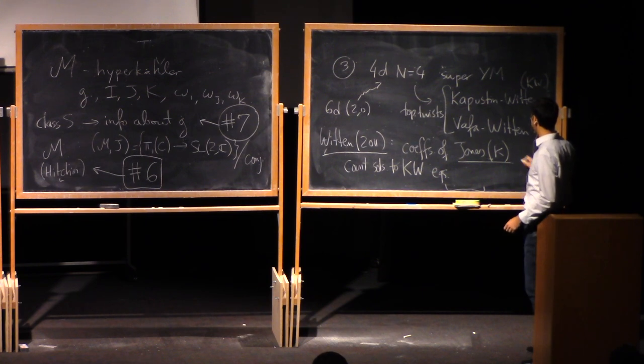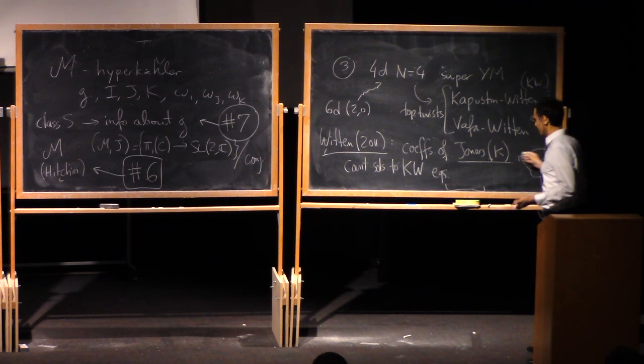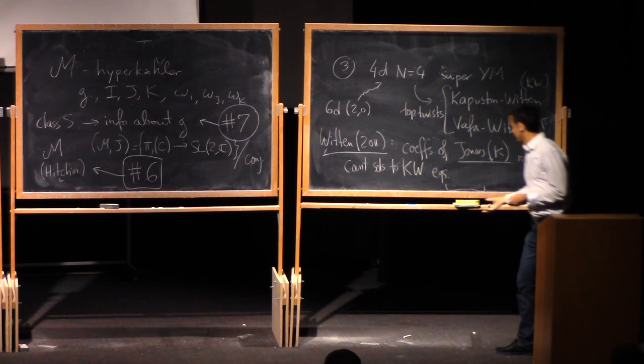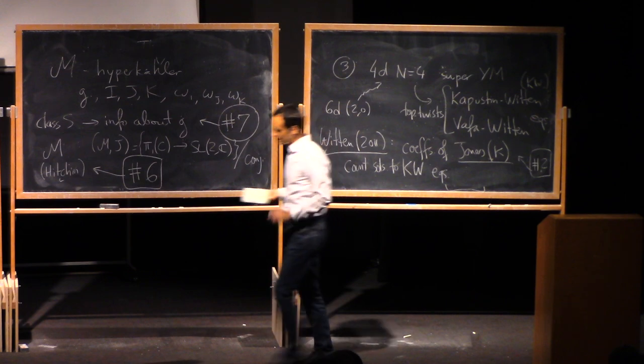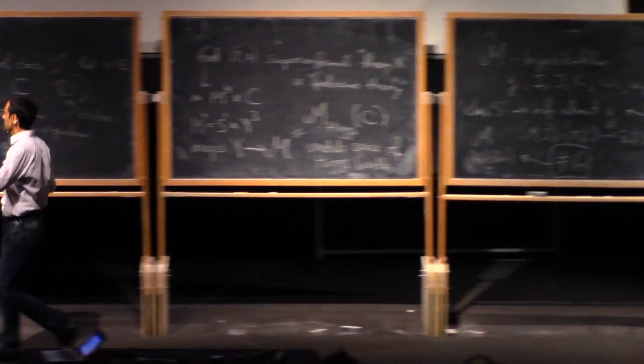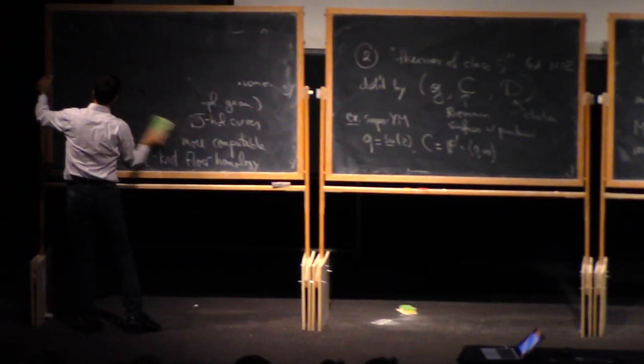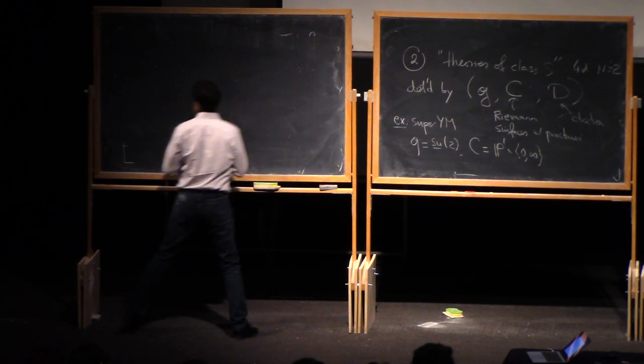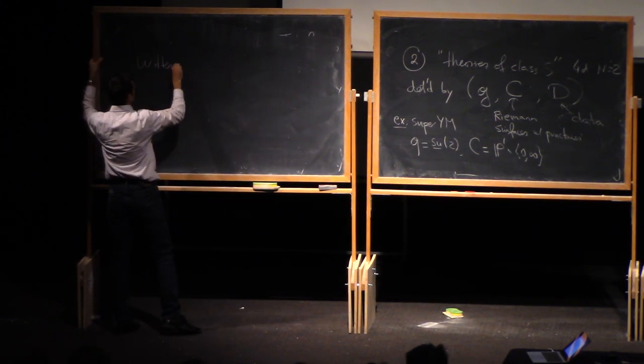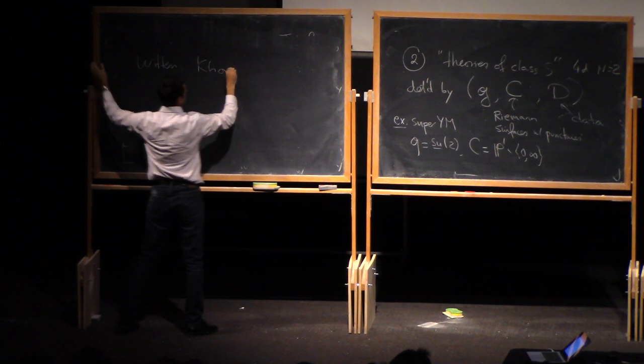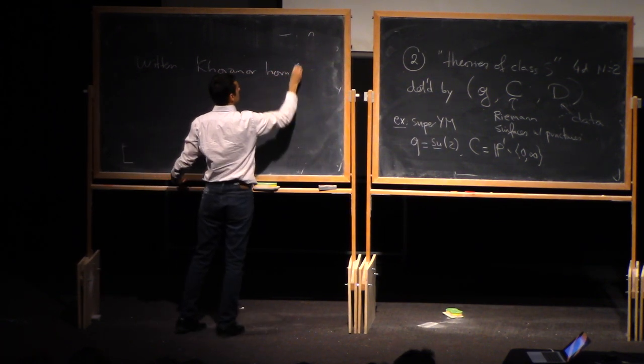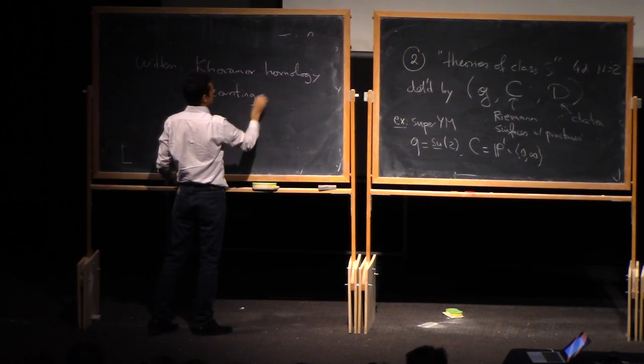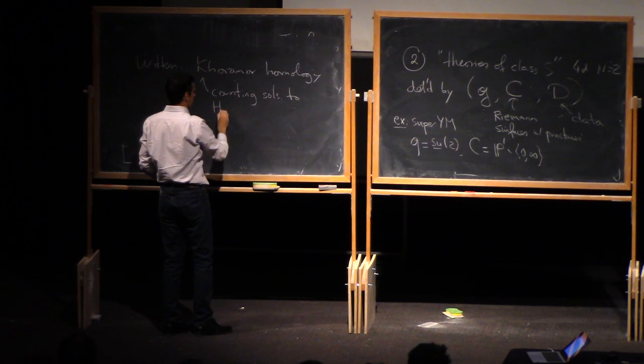Right, so this is somewhat related to lecture number two, but, okay, because, well, it involves the same thing. Actually, Witten said a bit more. So in lecture number two, you've also seen the categorification, which was Khovanov homology. And Witten also says that Khovanov homology should come from counting solutions to something called the Haydys-Witten equations.